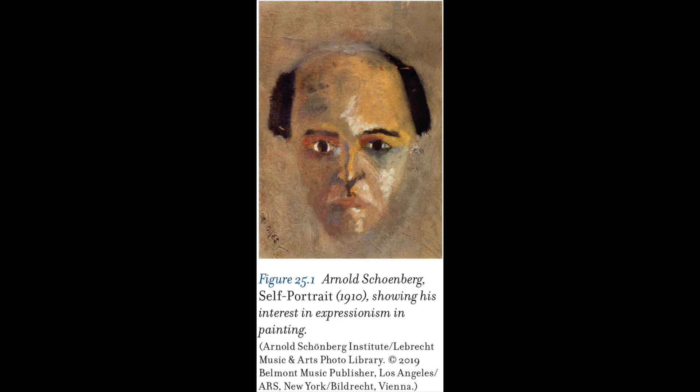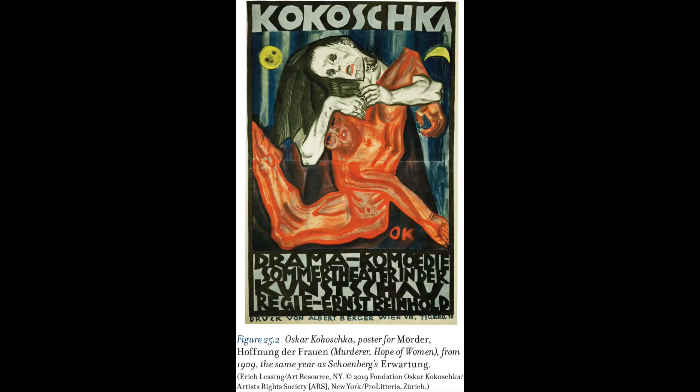Schoenberg was born in Vienna, where he received minimal instruction in theory and composition. After moving to Berlin, where he worked at a cabaret and taught composition, he returned to Vienna and took on Berg and Webern as students. There he became acquainted with expressionist painters. Schoenberg formulated the 12-tone method in the 1920s, and after the Nazis came to power, he immigrated to the United States, where he taught at UCLA. He was one of the most influential composers of the 20th century.